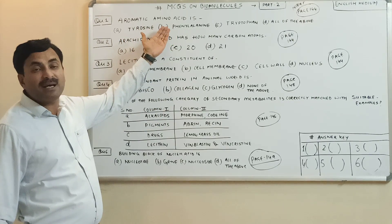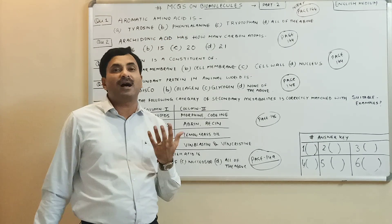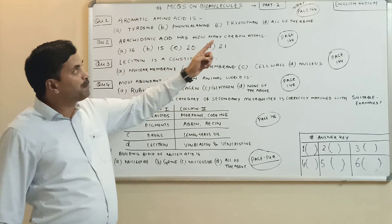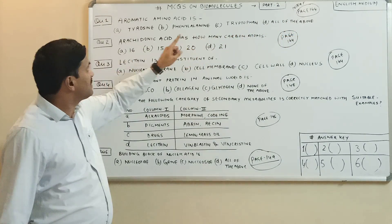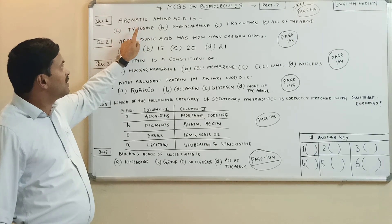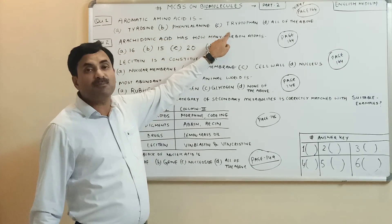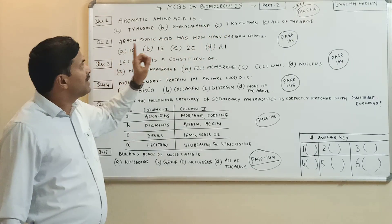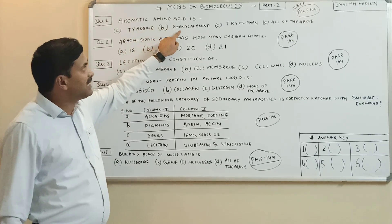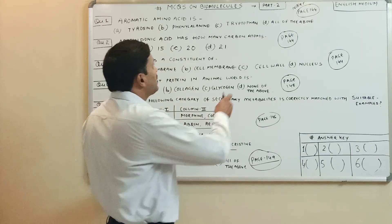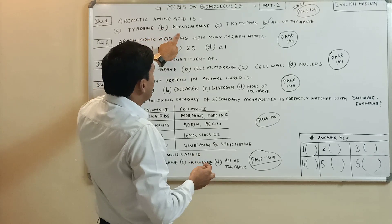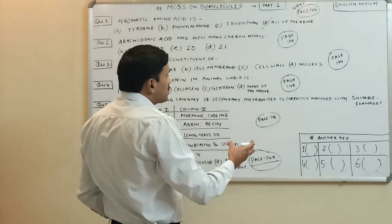The first question is about aromatic amino acids. As we know, there are 20 amino acids, but if you see NCERT page number 144, you will find three examples given for aromatic amino acids: tyrosine, phenylalanine, and tryptophan. So aromatic amino acids are of three types — tyrosine, phenylalanine, and tryptophan — and the answer must be 'all of the above,' which is option B.